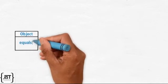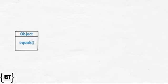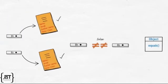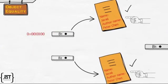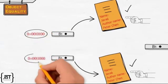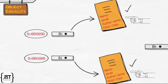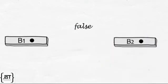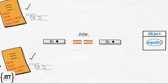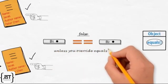In Java, every object has access to the equals method because it is inherited from the object class. In order to check the equality of two objects and not their references, we will need to use the equals method. However, the default behavior of equals is to simply compare the memory addresses of the objects. Since the memory addresses of b1 and b2 are different, b1.equals(b2) will return false unless you override equals.